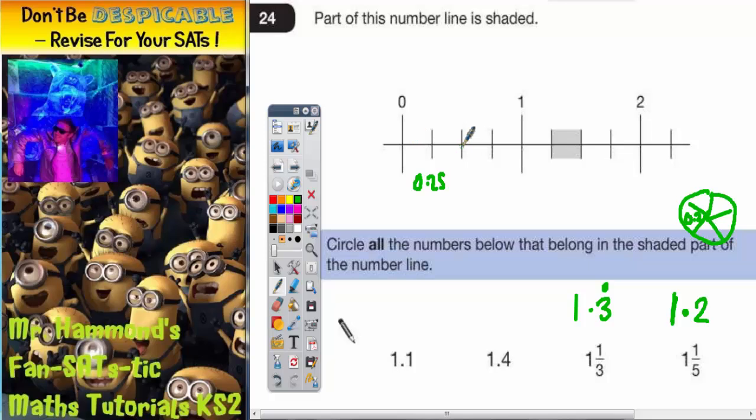This second line is half the way along so that's 0.5. Three quarters of the way along is 0.75. And then we've got a whole one. Then it goes again 1.25, 1.5, 1.75, two whole ones.